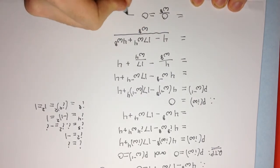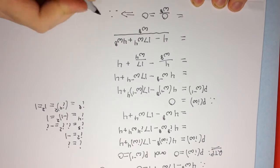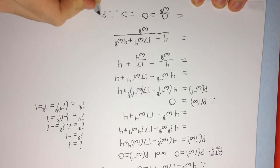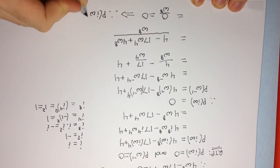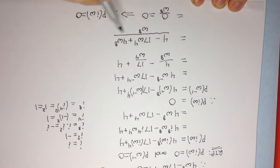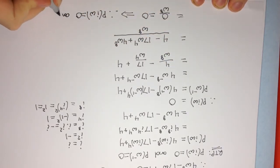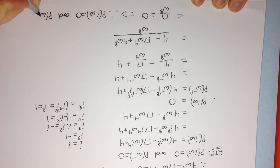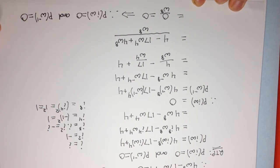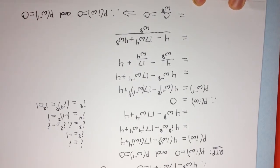Therefore, we've proven that p(iω) = 0, and we've also proven that p(ω⁻¹) = 0. So that's the end of the question. Thank you.